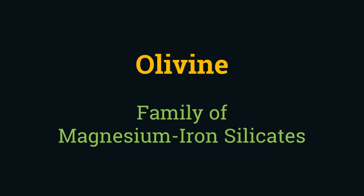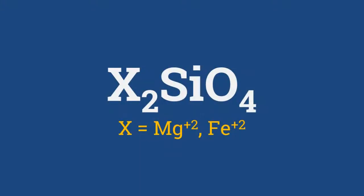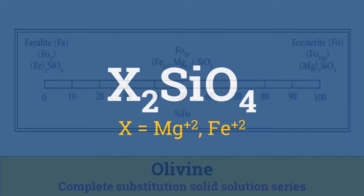Olivine is not the name of a particular mineral. The definition of a mineral stems from the characteristic that the material has a fixed chemical composition. Olivine is rather a family of magnesium iron silicates whose general formula can be represented as X₂SiO₄, where X is magnesium or iron.